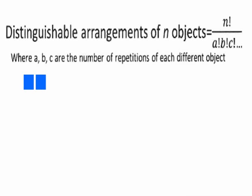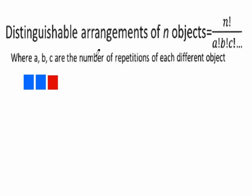Distinguishable Arrangements of n objects: the secret formula is you take the number of objects factorial, and then you divide it by the number of objects of each type that are the same. If you've got repetitions of one object, and repetitions of another object, etc., you divide by the factorial of each of the numbers of repetitions.